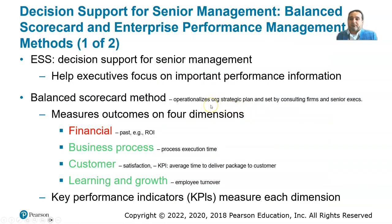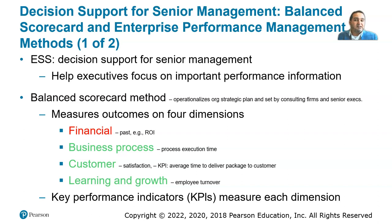Executive support systems are decision support tools for senior managers — the C-suite. They help executives focus on important performance information. To define what counts as important, senior managers follow specific methodologies. The Balanced Scorecard is one methodology that operationalizes the organizational strategic plan, making it measurable.